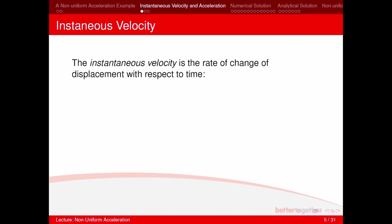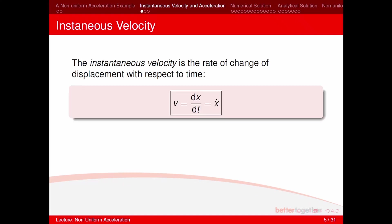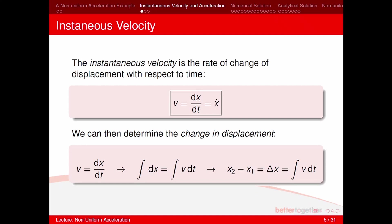Instantaneous velocity is the rate of change of displacement with respect to time. We write this as v = dx/dt, or x-dot. We can multiply both sides by dt to get dx = v dt, and integrating both sides gives the change in displacement: Δx = ∫v dt.